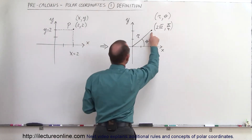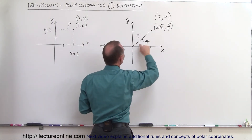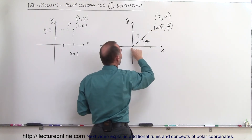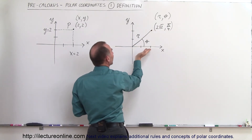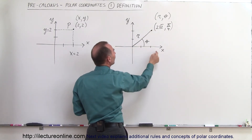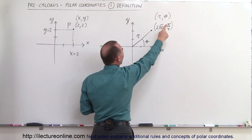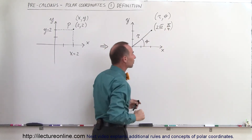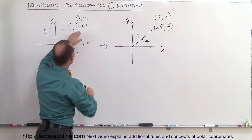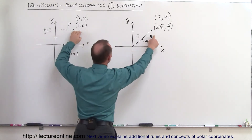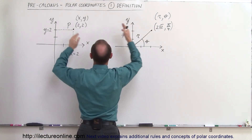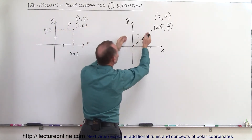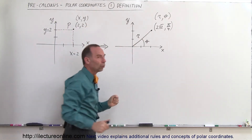So that very same point can be found by saying it's a distance of 2 times the square root of 2 away from the origin, with an angle of 45 degrees, or pi over 4, above the x-axis. That means those are the exact same point in the plane — one indicated in Cartesian coordinates and one in polar coordinates.